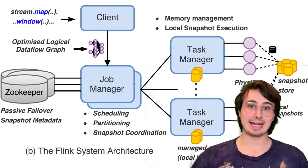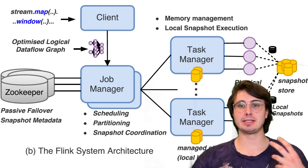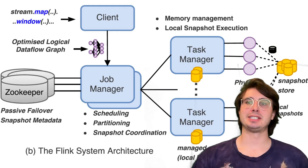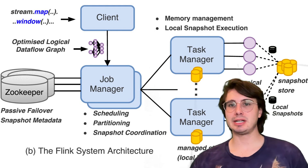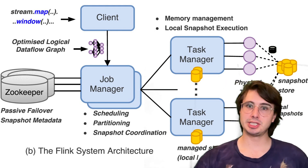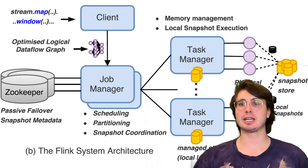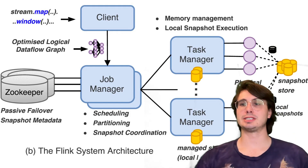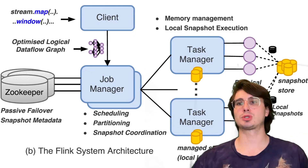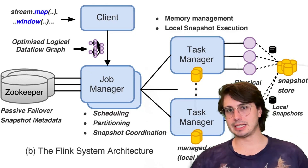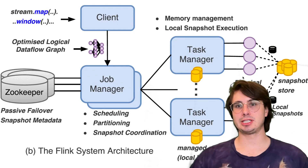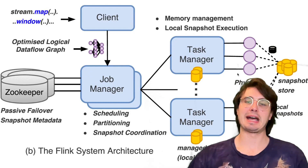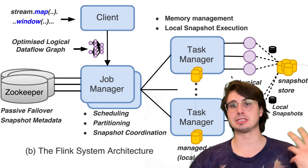The heap state backend is probably the fastest for small state sizes, but it's limited by JVM heap memory — basically just attached JVM storage. It's suitable for applications with state sizes under a gigabyte where low latency is most critical, but it requires careful garbage collection tuning to avoid long pause times when data starts to back up.